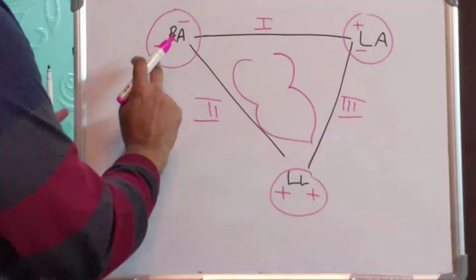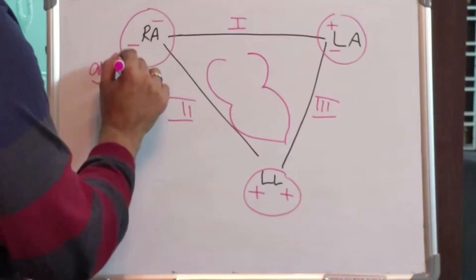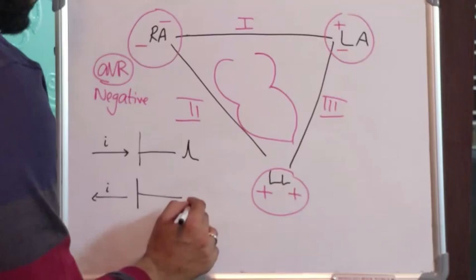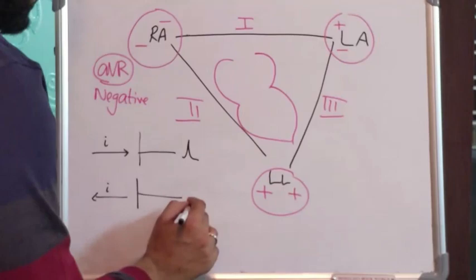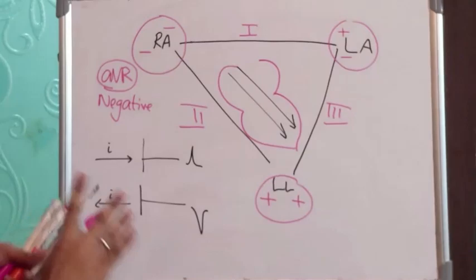Now the unipolar lead at the right arm is AVR and as you can see AVR is always negative. Now the reason AVR is always negative is if you remember the basic concept: current coming towards an electrode gives a positive deflection and current going away from an electrode gives a negative deflection. So the AVR which is looking at the heart from the right side, the predominant current, the vector of current is going away from AVR. That's why AVR is always negative. P is negative, QRS is negative, T is negative in AVR.